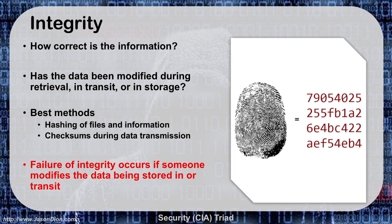The next thing we're going to talk about is integrity. Integrity is all about how correct that information is — how has the data been modified in retrieval, in transit, or in storage? For example, your bank account balance — you want that information to be exact. If you have $1,000 in the bank, you'd be really mad if it said $10 because they dropped two zeros. We want the information to be accurate and the way we intended it, whether stored in the database, transmitted over the internet, or retrieved on your desktop.